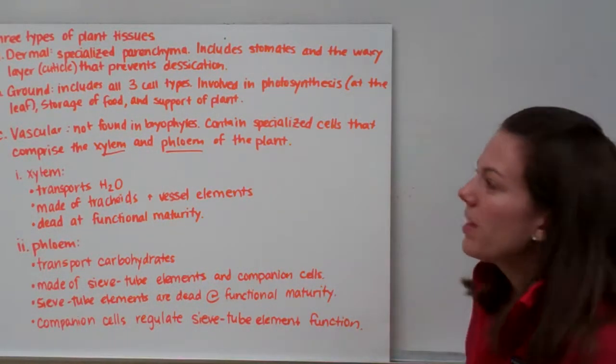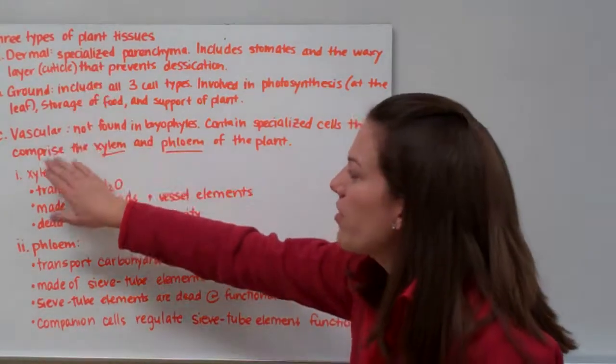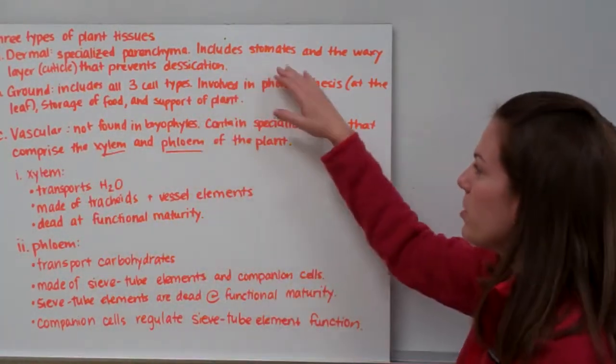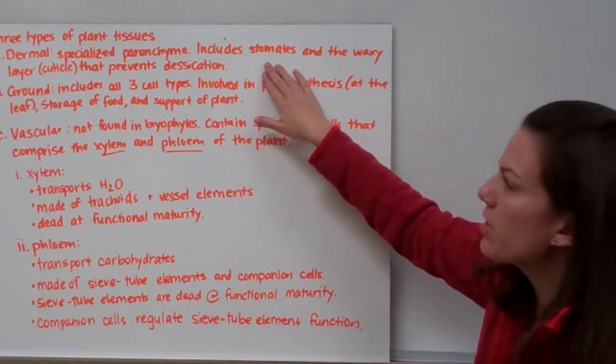We have three types of plant tissues. Our plant tissues are dermal, ground, and vascular tissues. Our dermal tissues are specialized parenchyma. They're parenchymal cells. And they include our stomata.